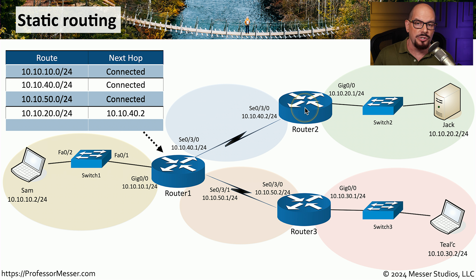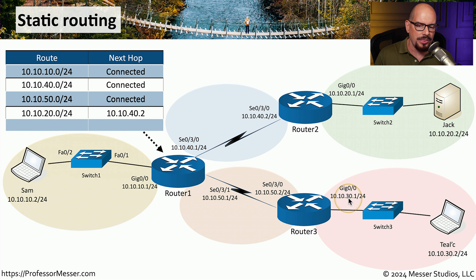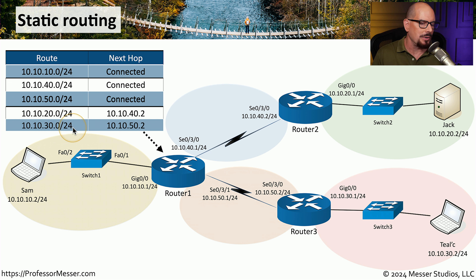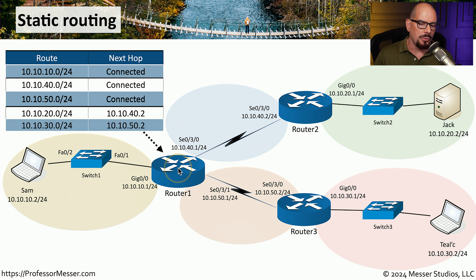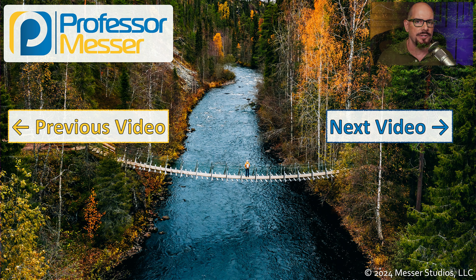At that point, router 2 will examine its own routing table and know that the 10.10.20 network is locally connected and send that packet on its way. We can do the same thing with the 10.10.30.0 network — we will manually configure a static route so that any destination traffic going to 10.10.30.0/24 will be sent to 10.10.50.2, which means all of that traffic will go to router 3. Now that we've configured those static routes in router 1, anytime those additional networks are seen as a destination IP address, router 1 will know exactly where to send that traffic.